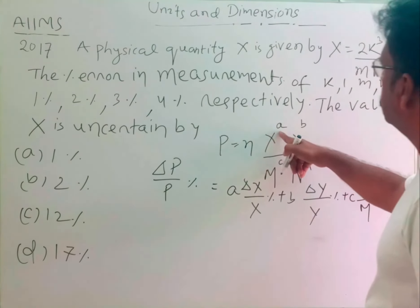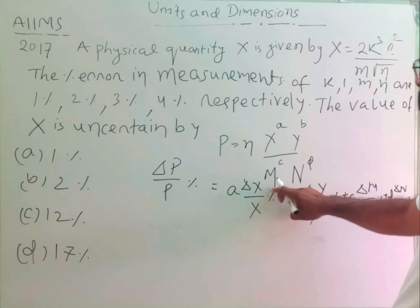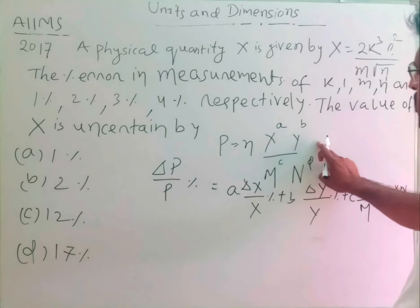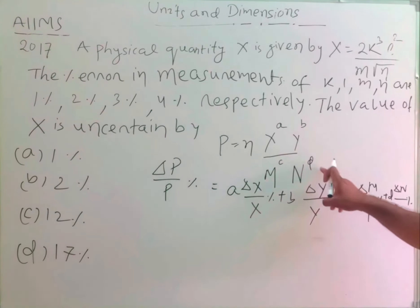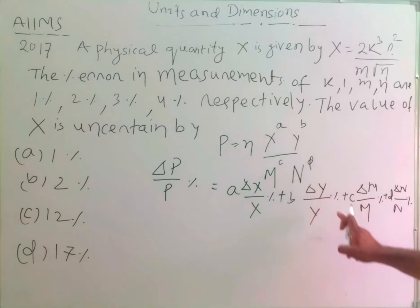You see, here the exponents are A, B are positive, and when M and N are written in the denominator, the exponents will be minus C and minus D, they are negative. But here, see, both of them are added and not subtracted.